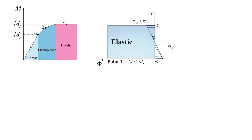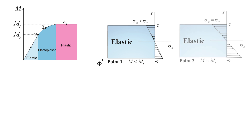Sigma_m equals Mc over I. At point 2, as the bending moment M increases, sigma_m reaches the yield strength sigma_y. Using the flexural formula and solving it for My, the value of the yield moment, or maximum elastic moment, is: My equals sigma_y times I over c.